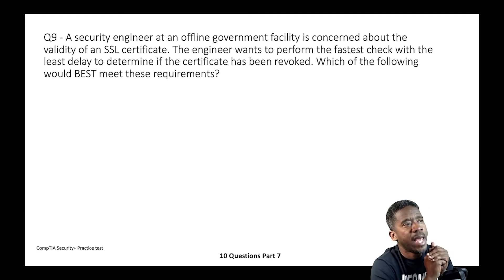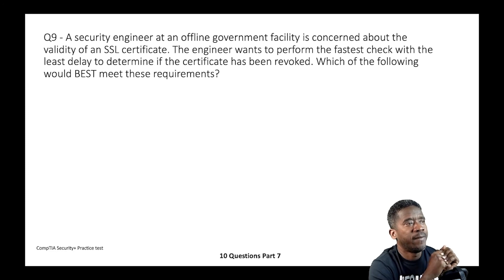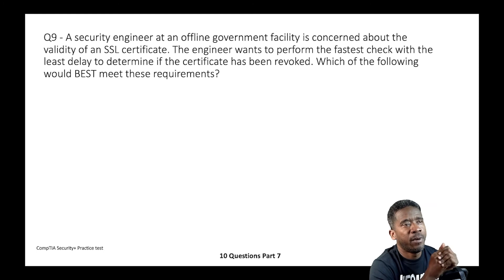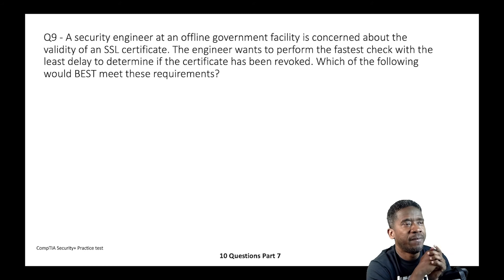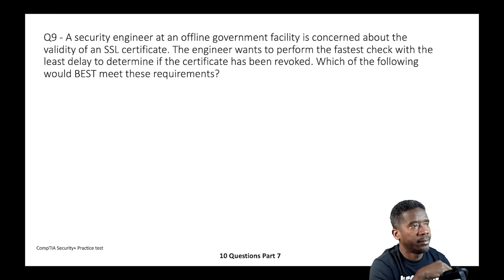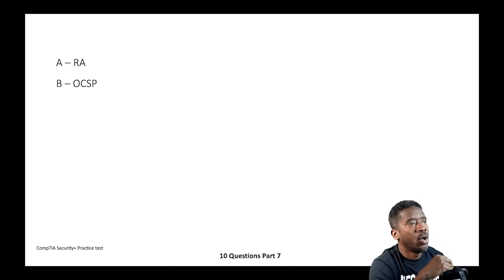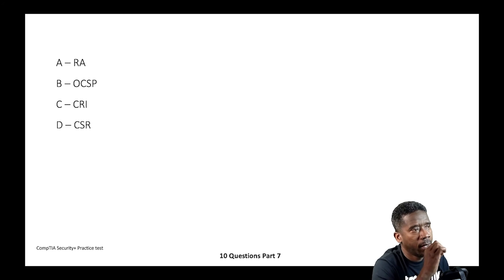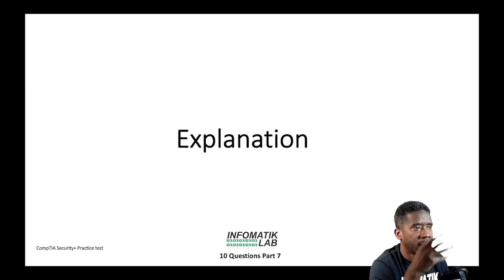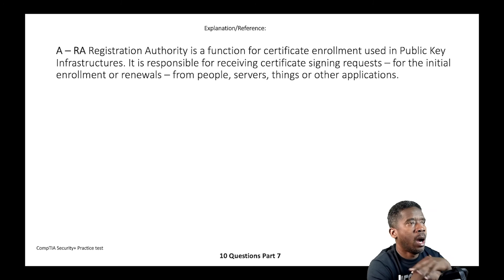Question nine: A security engineer at an offline government facility is concerned about the validity of an SSL certificate and wants to perform the fastest check with the least delay to determine if the certificate has been revoked. Which of the following would best meet these requirements? A) RA, B) OCSP, C) CRI, or D) CSR.